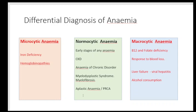Normochromic normocytic anemia includes a spectrum of all diseases in the early stages. Anemia of chronic disorders, chronic kidney disease, aplastic anemia, pure red cell aplasia, and myelodysplastic syndromes can all present as normocytic normochromic anemia. There is no nutritional deficiency driving it, so it doesn't present as macrocytosis or microcytosis — there is a problem with the bone marrow that needs evaluation.